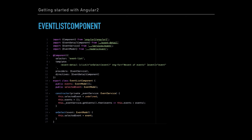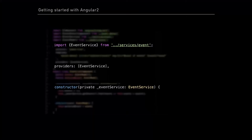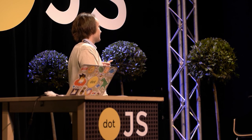So what about working with data? Here is the event list component, where I use another cool feature of Angular 2 — the completely redesigned dependency injection framework. It's really nice. In three simple steps: you import your service, you define it in your class constructor, and you list it as a provider in the class decorator.